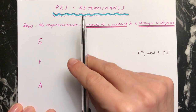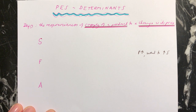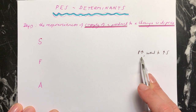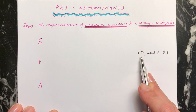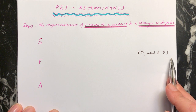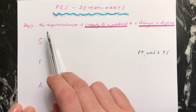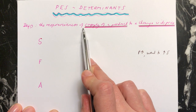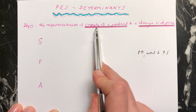Hi everybody. We're now going to look at the determinants of price elasticity of supply — what causes the PES to be elastic or inelastic, and how do we remember the factors that determine this? The definition of price elasticity of supply is the responsiveness of the supply of a product to a change in its price. So how much can supply respond when there's a change in price?